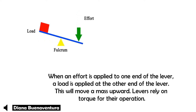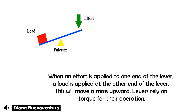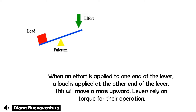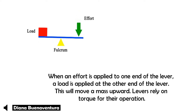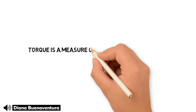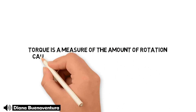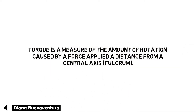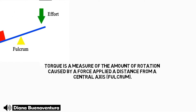Levers rely on torque for their operation. This is located on top of the fulcrum, where when enough force is applied, you are able to cause an object to rotate around its axis. Torque is a measure of the amount of rotation caused by a force applied at a distance from a central axis, or the fulcrum.